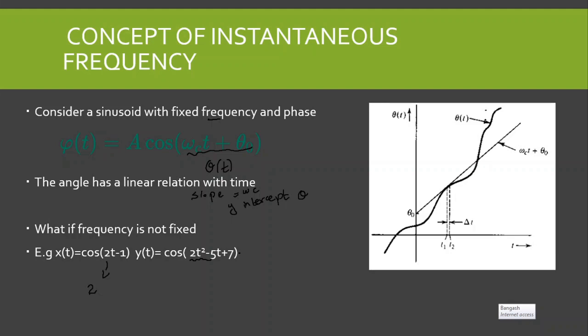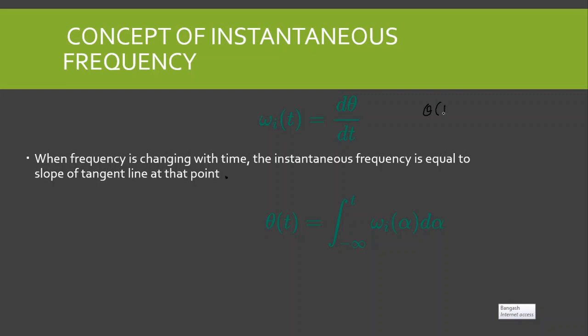This is the angle graph which changes with time. To find the instantaneous frequency, we take a point and find the slope of the tangent line, which is the derivative. If the angle phi of t equals omega c·t plus theta naught — a linear function of time — then the instantaneous frequency omega i of t equals omega c. To find the angle in general, we take the integration from minus infinity to t of omega i(alpha) d·alpha, where alpha is a dummy variable.